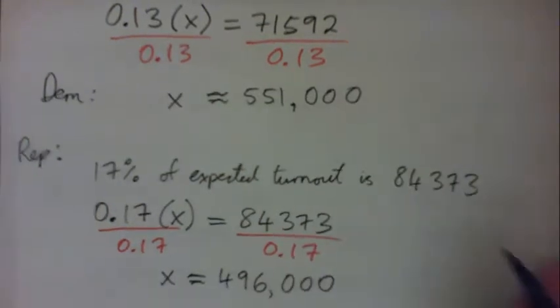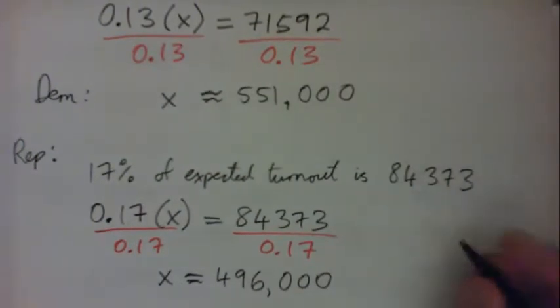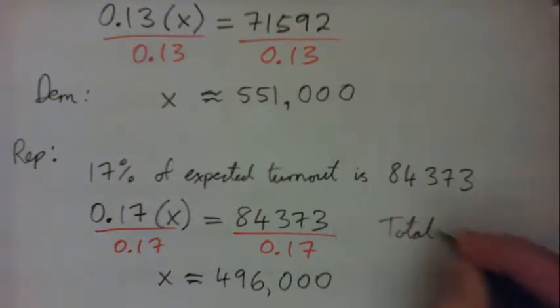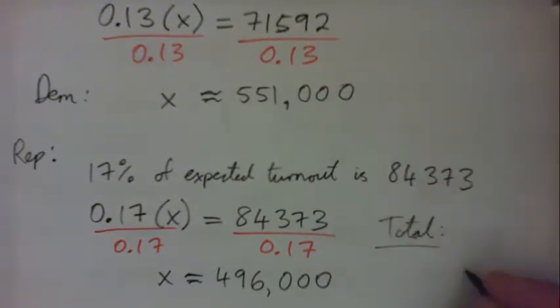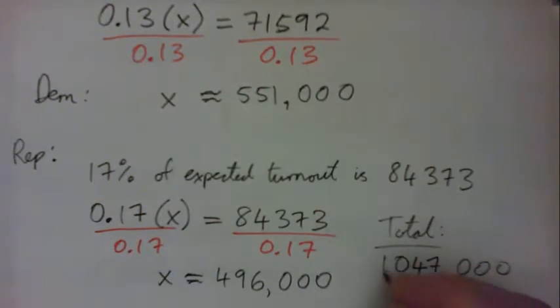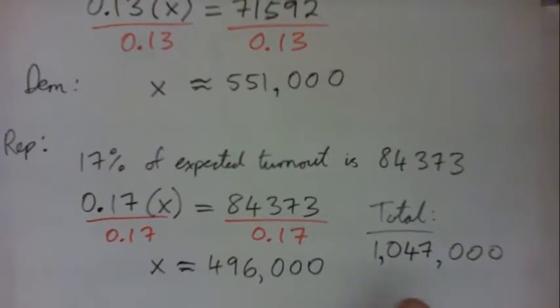So add them together, and we get this plus this...0, 0, 0, we got a 7 there, 4, carry 1, 0, 1. So 1,047,000. Do you get that?